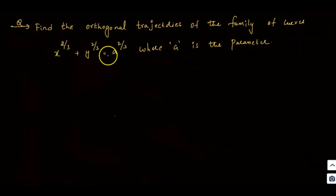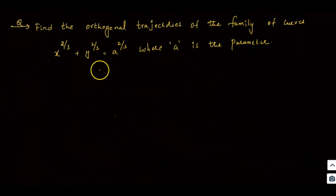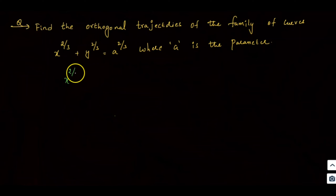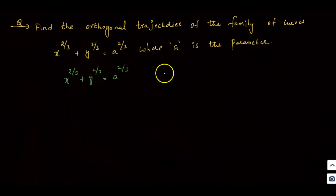This definition is worth two marks and is very important. If you have a short answer question on the orthogonal trajectory definition, those two marks are key. The problem is: x^(2/3) + y^(2/3) = a^(2/3), where 'a' is a parameter.